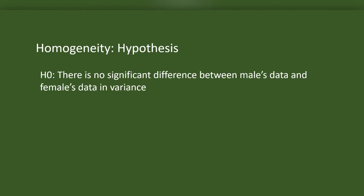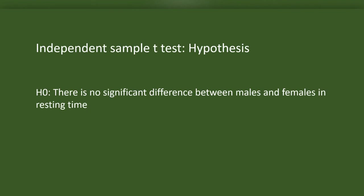To do the t-test in independent samples, these samples have to be homogeneous, or we should have a homogeneity of variance in these two groups. The test of homogeneity tests the hypothesis: there is no significant difference between males' data and females' data variance. This is the hypothesis for independent sample t-test test: there is no significant difference between males and females in resting time.